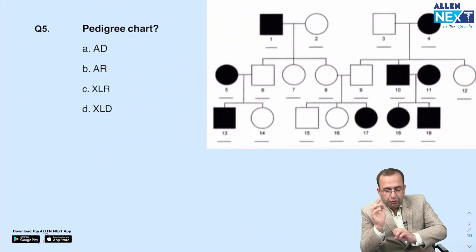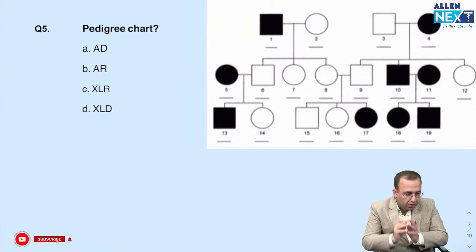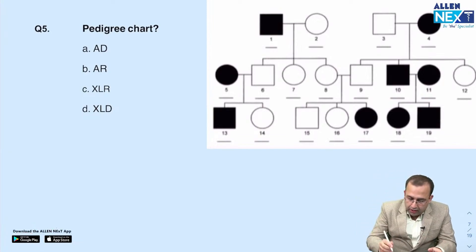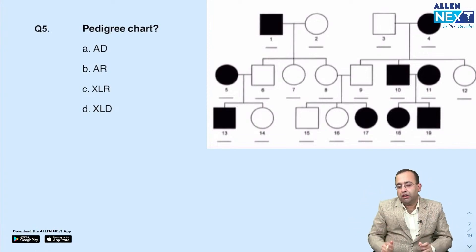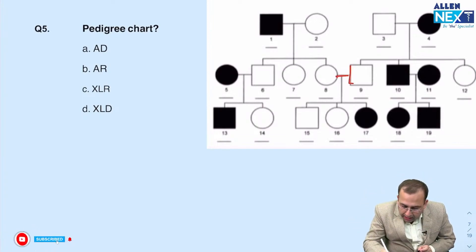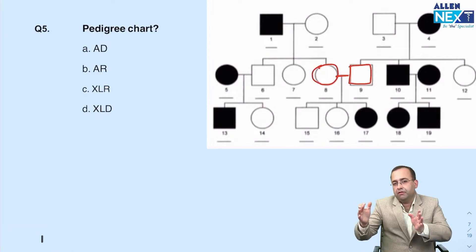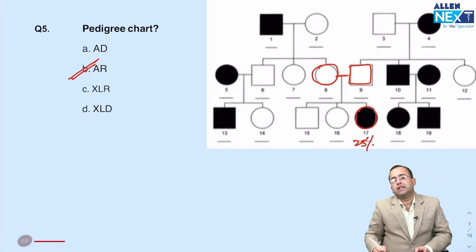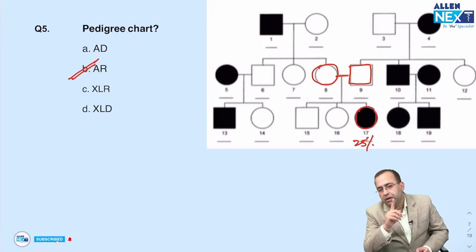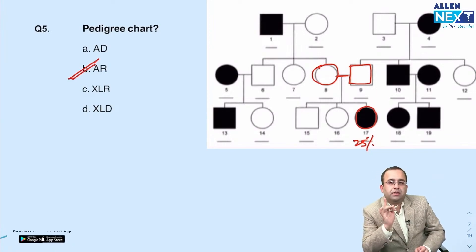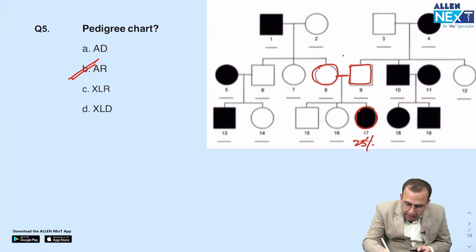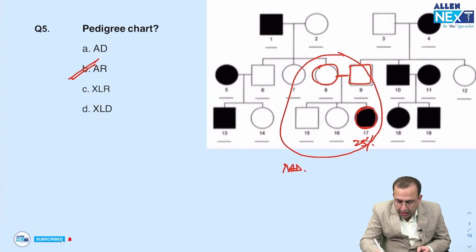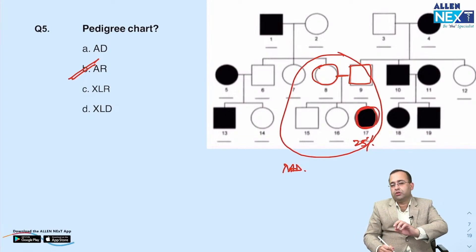Pedigree chart question: many students were confused. When two carriers mate, 25% of children are affected. This is autosomal recessive — autosomal recessive diseases skip generations versus autosomal dominant which do not. The child is diseased but none of the parents are diseased, so this is autosomal recessive.